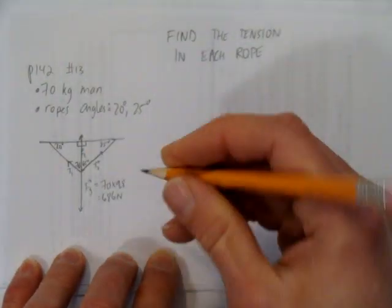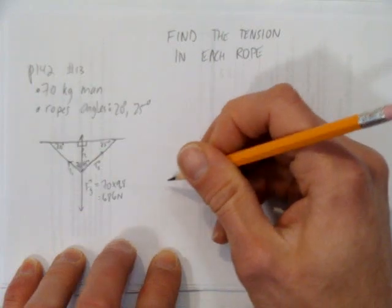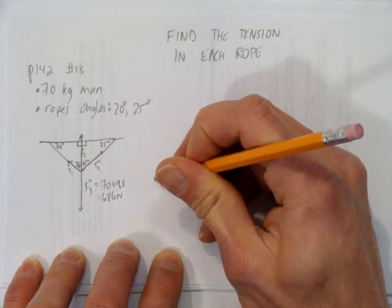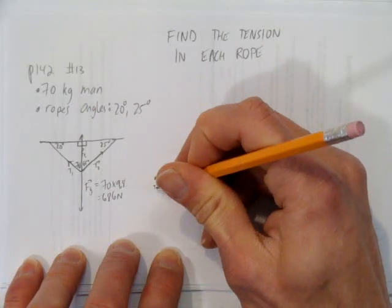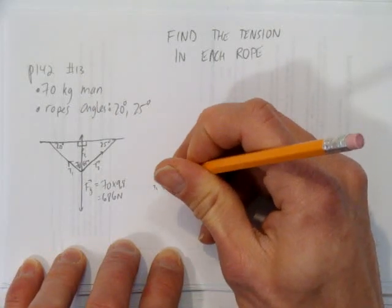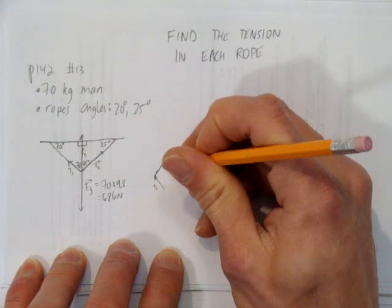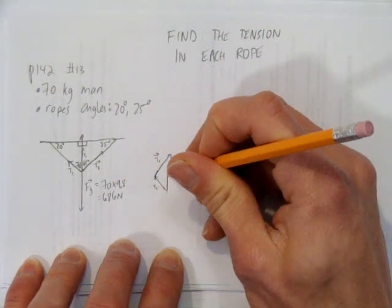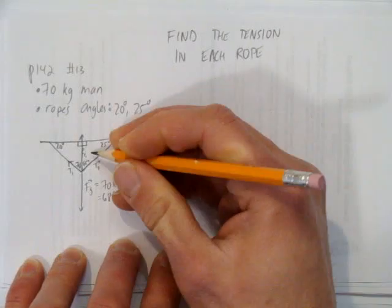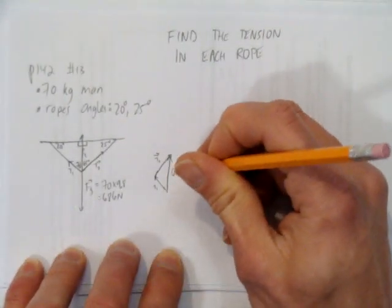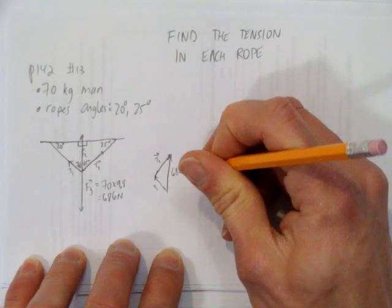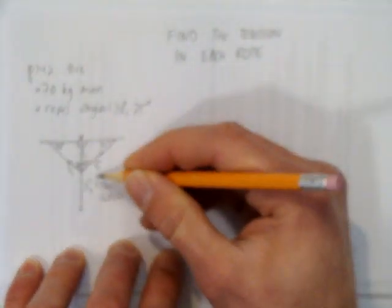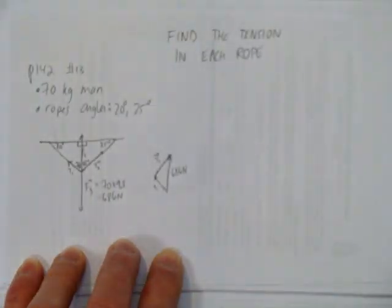So let's draw our force diagram. We have this vector T1, that first tension, plus the second tension vector. Let's draw it like that. T2. And that has to add up to that equilibrium force, which I know also has to be 686 newtons. It has to equal this force in magnitude. It's in the opposite direction, but same exact force.